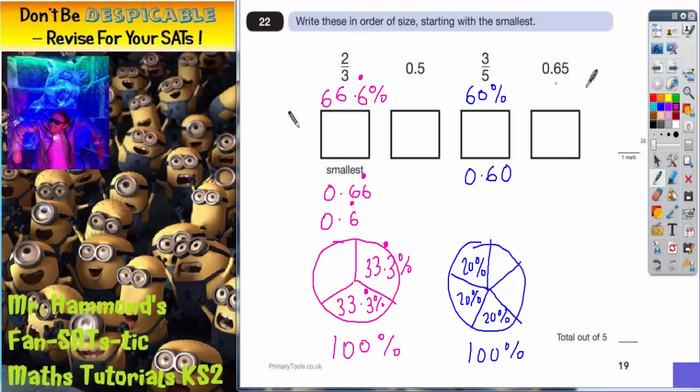Okay now 0.65 well as a percentage that's nice and easy that's just 65 percent and 0.5 which is the same as 0.50 is the same as 50 percent.